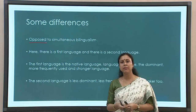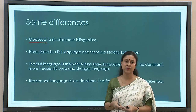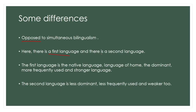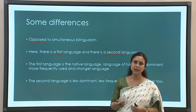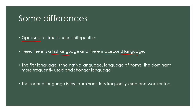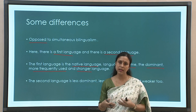In simultaneous bilingualism there is no first language and second language as such — both are first languages because both are simultaneously learned. But in successive bilingualism there will be a first language and a second language. The first language will typically be the native language, the language of home, the dominant language, the most frequently used one, and by virtue of that it is also the stronger language.